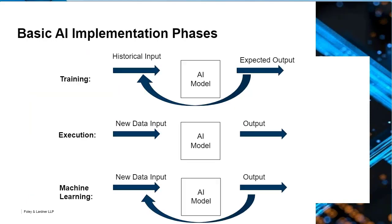So there are different phases to implementing AI. The first phase: we're going to take our model and put in historical data — data where we know what the input is and we know what the expected output should be. If we want an AI model that figures out the difference between a cat and a dog, we're going to put in pictures of cats and dogs, know which are supposed to be which, tell the AI model this one should be a cat and this one should be a dog, and train it, tweaking the weightings and variables so it understands how to get to that output.